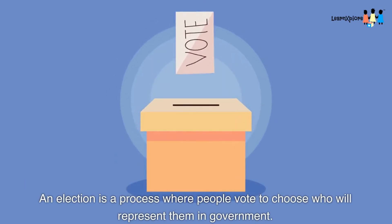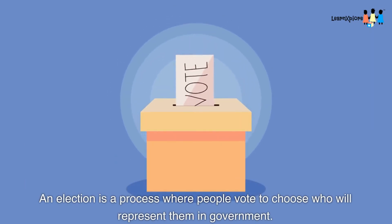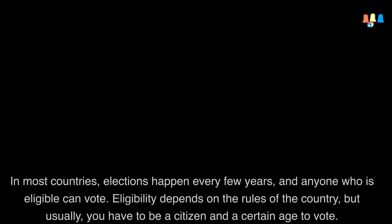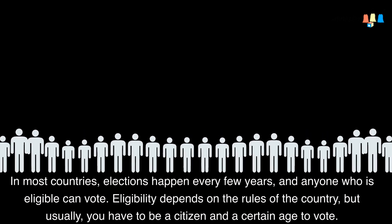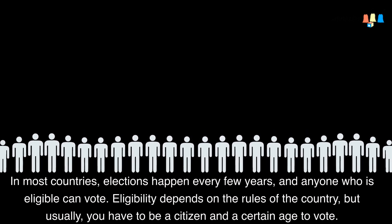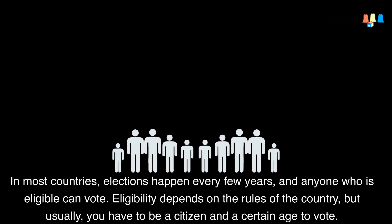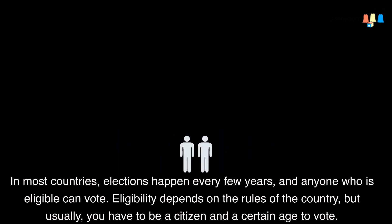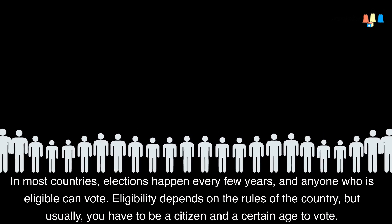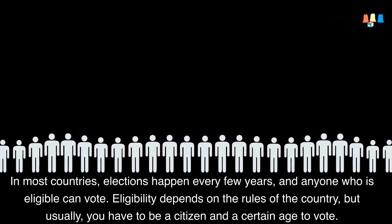An election is a process where people vote to choose who will represent them in government. In most countries, elections happen every few years and anyone who is eligible can vote. Eligibility depends on the rules of the country, but usually you have to be a citizen and a certain age to vote.